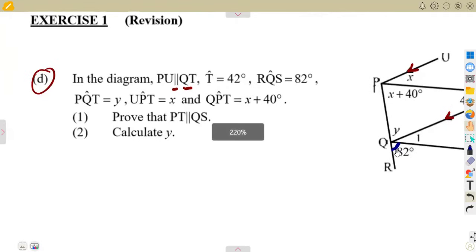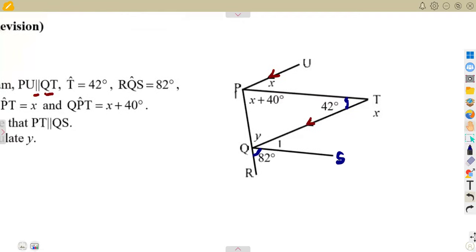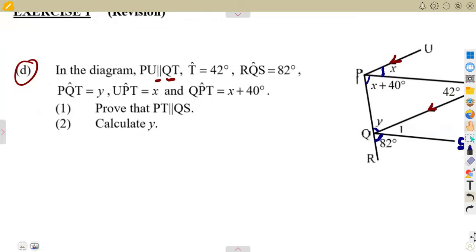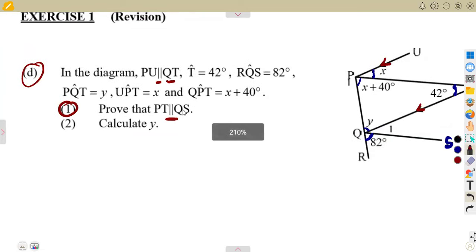With this information, we are also given this is angle Y, which is P, Q, T, and the other part of X. We are given our angles. This is X plus 40, and this is X on this part. And we are told that these two lines, they are parallel. Prove that PT is parallel to QS.